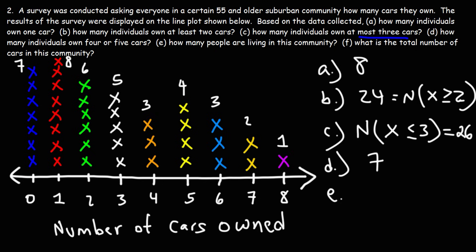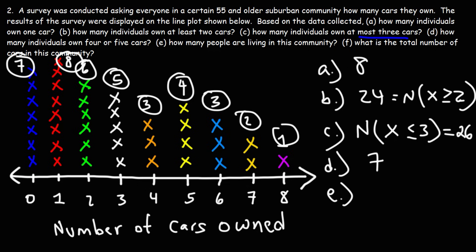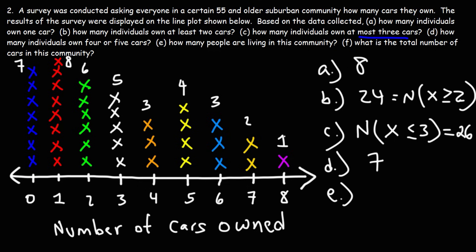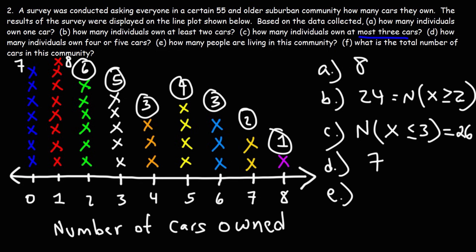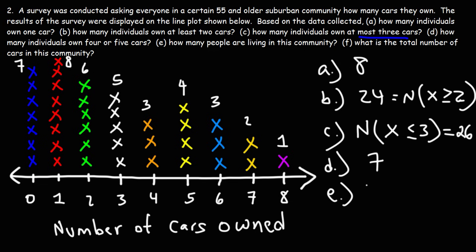Now for part E: how many people are living in this community? To get this answer, we add up the total number of X's in the line plot. One plus two is three, plus three is six, plus four is ten, plus three is thirteen, plus five is eighteen, plus six is twenty-four, plus eight is thirty-two, plus seven is thirty-nine. So there are thirty-nine individuals who responded to the survey, meaning thirty-nine people are living in this community.